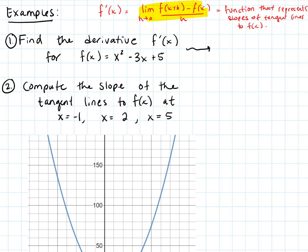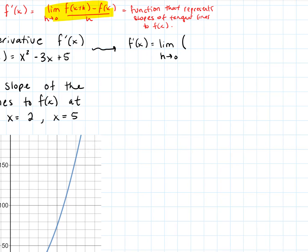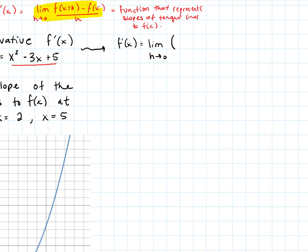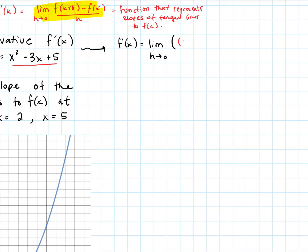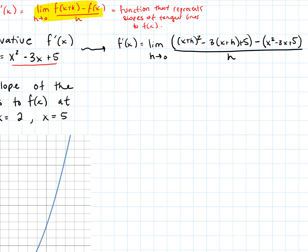Let's compute. We take the limit as h goes to zero, and we plug in: f(x+h) = (x+h) squared minus 3 times (x+h) plus 5, and we subtract f(x) = x squared minus 3x plus 5, all over h. Expanding (x+h) squared gives x squared plus 2xh plus h squared. Distributing the negative 3 gives negative 3x minus 3h plus 5. Distributing the negative sign on the f(x) term gives negative x squared plus 3x minus 5, all over h.